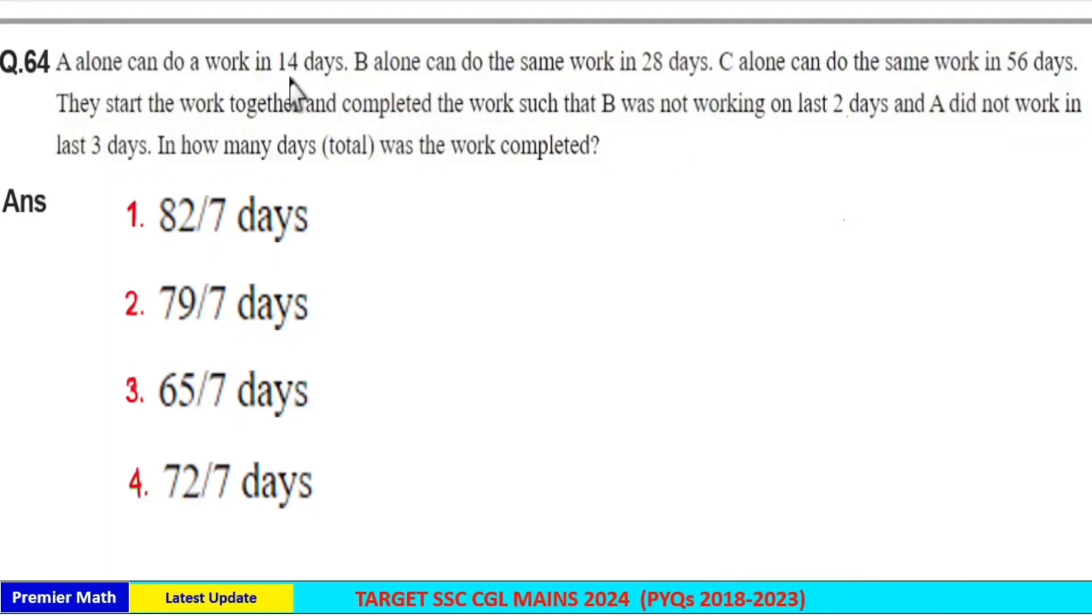A alone can do a work in 14 days, B alone can do the same work in 28 days, C alone can do the same work in 56 days. They start the work together and completed the work such that B was not working on last 2 days and A did not work in last 3 days. In how many days total was the work completed?